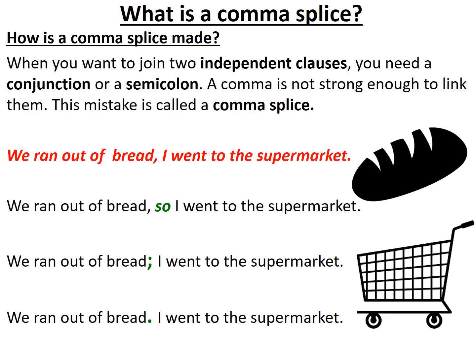So a comma splice is a mistake. We should realise that in order to join two independent clauses we either need to use a conjunction — words like so, and, or, but — or use a semicolon, because it's stronger to link and bind our independent clauses.